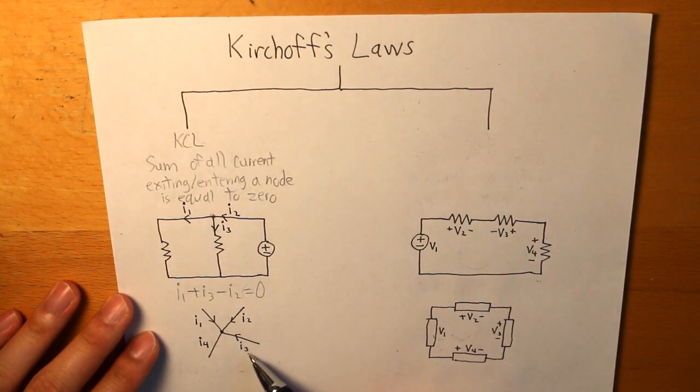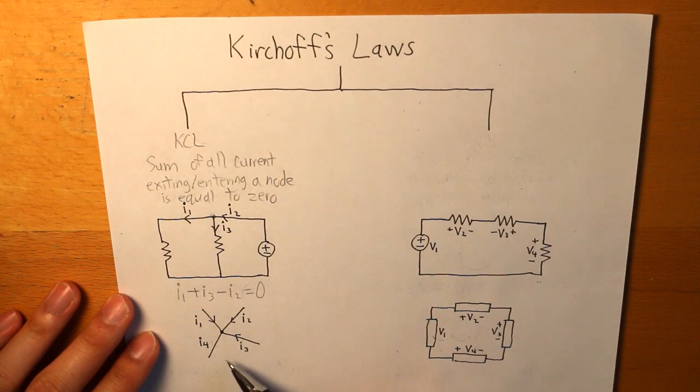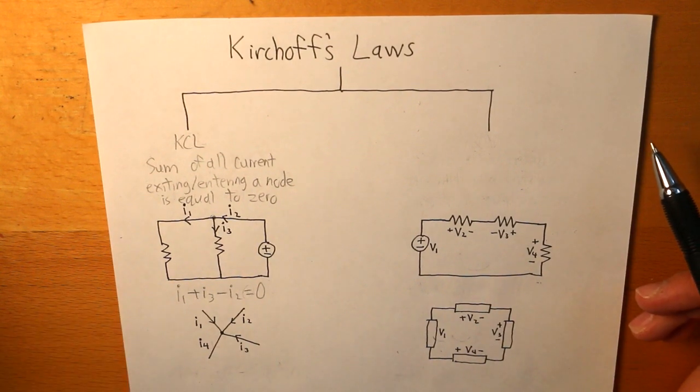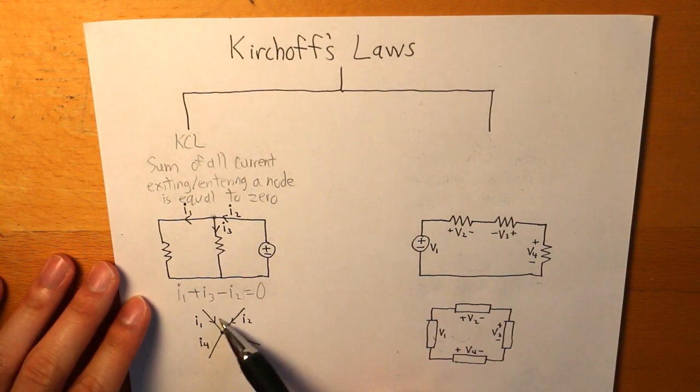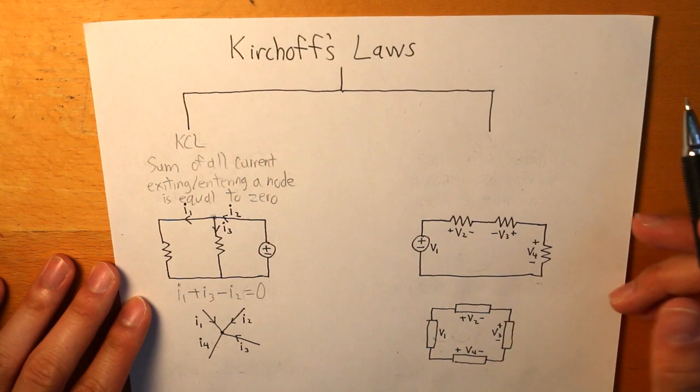Now we have this other diagram right here and what we want to do is we want to determine what I4, the direction of where I4 is flowing. Well, what we have are three other currents and we're already given that all three of these currents are entering that node.